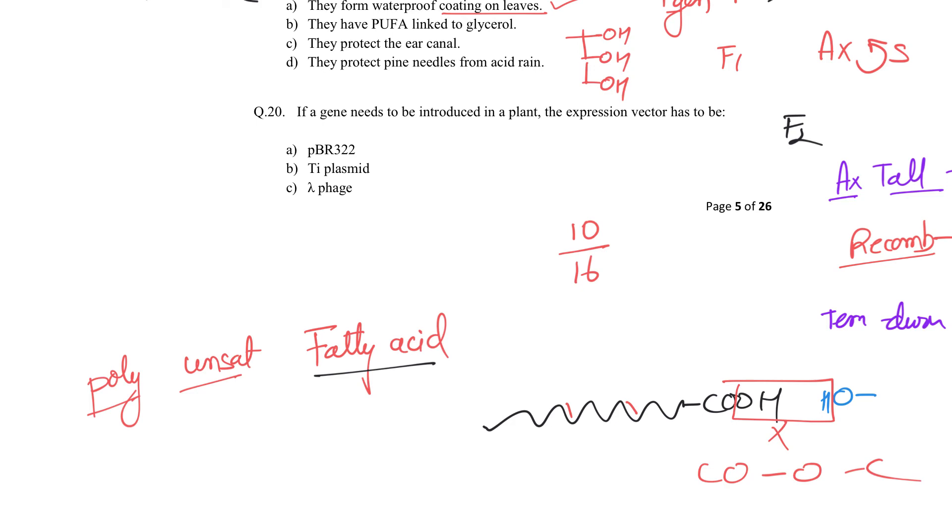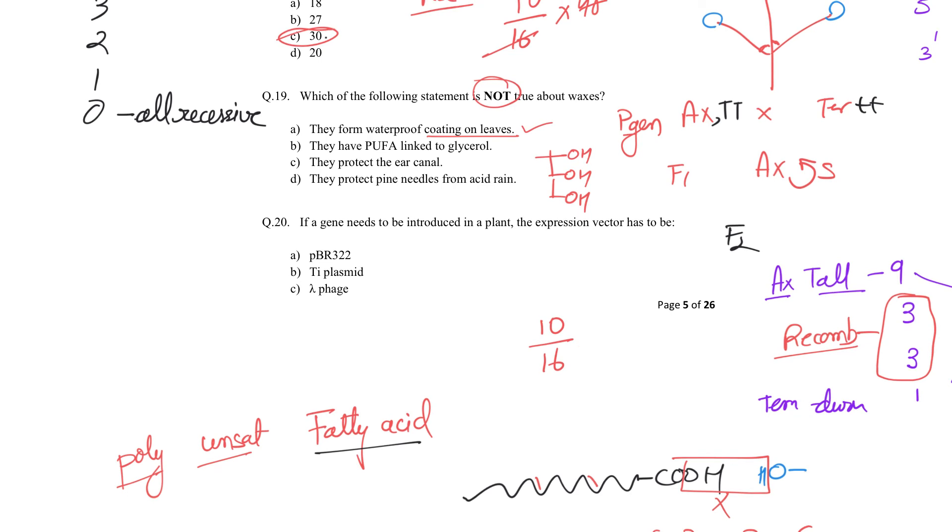This is what happens in formation of triacylglycerol - glycerol has three OH groups, three fatty acids attach. So that's correct. They protect the ear canal - also true because dead cells in ear canal help with sound balancing. They protect pine needles from acid rain? Not at all. Just because it's lipid doesn't mean it can protect. Use kitchen knowledge - how do you wash dishes? With acidic detergent that can cleave these bonds. So no, they don't protect from acid rain.